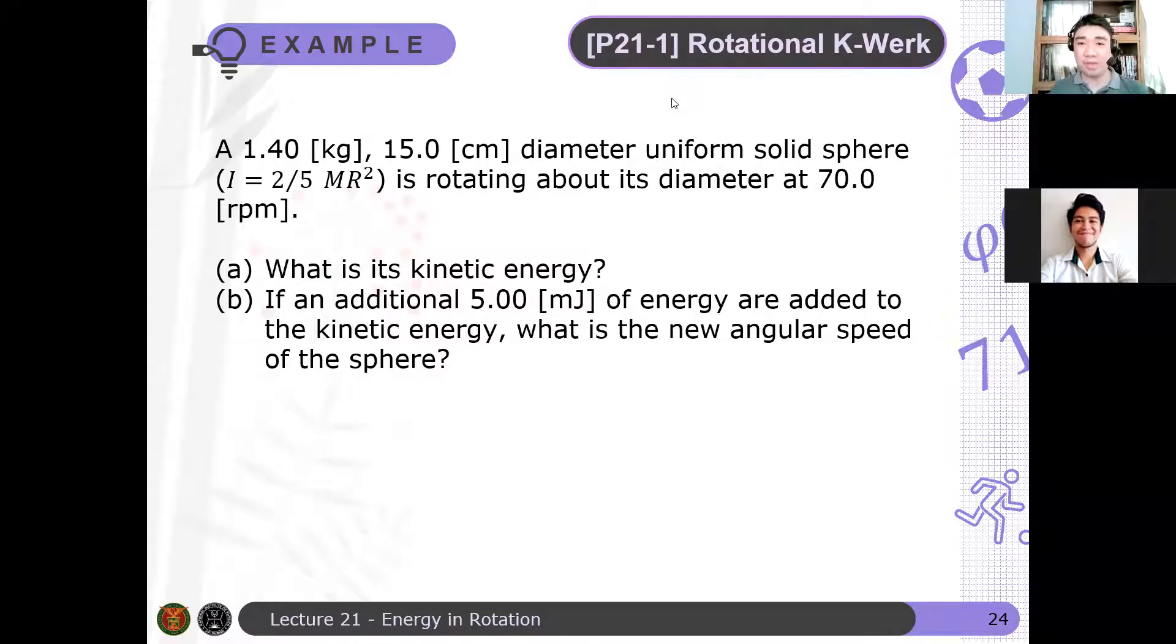Let's have an example here. Problem 21-1, rotational work. A 1.4 kilogram, 15 cm diameter uniform solid sphere, where the moment of inertia about the center of mass is given as 2.5 MR squared, is rotating about its diameter at 70.0 RPM.